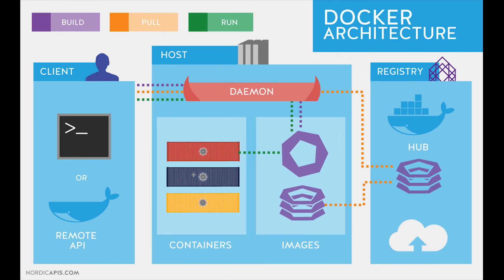Kubernetes was created by Google and tends to be the default solution for automating application deployment, scaling, and management. It is open source, providing key features out of the box. Similarly, AKS is managed Kubernetes on Azure — these are managed services provided by Azure, GCP, or AWS. Then we have Apache Mesos, which allows developers to run both containerized and non-containerized workloads in a distributed manner, best known for supporting diverse workloads including big data and cloud-native apps.